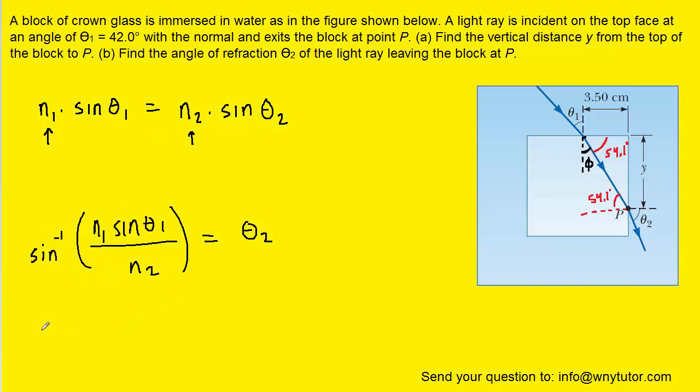And then we'll plug in the known values. And when we simplify that, we get approximately 67.5 degrees for the value of theta 2. So that's that angle over here.